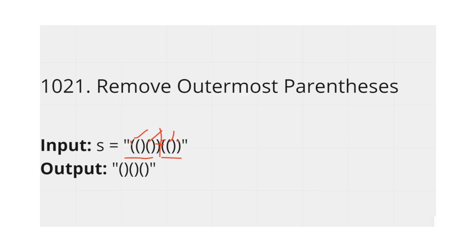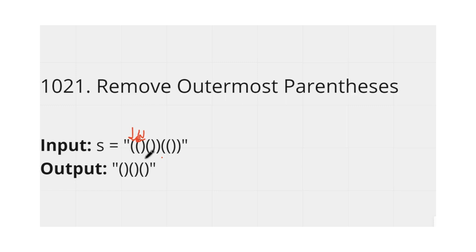To solve this problem, we will use a counter variable. We increase our counter when we encounter an open parenthesis. Initially our counter is 0; when we get an open parenthesis, it becomes 1, then 2 on the next open. When we get a close parenthesis, we decrease our counter by 1, so from 2 it becomes 1.